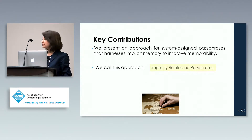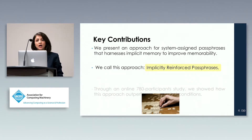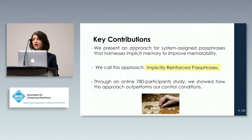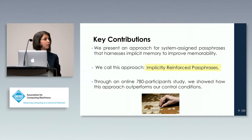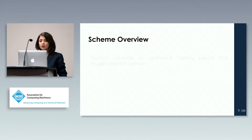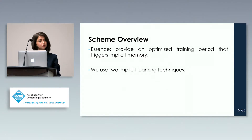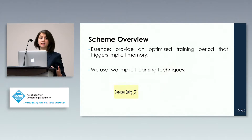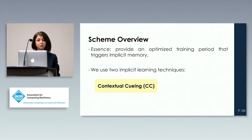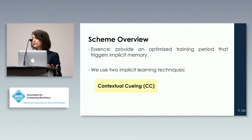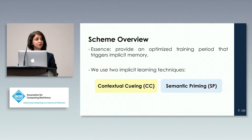We call our approach implicitly enforced passphrases. Through an online user study on Amazon Mechanical Turk with 780 participants, we showed that this approach outperforms our control conditions. The essence is to provide an optimized training period that triggers implicit memory. To do that, we use two paradigms: contextual cueing, which we refer to as CC, and semantic priming, which we refer to as SP in the next few slides.